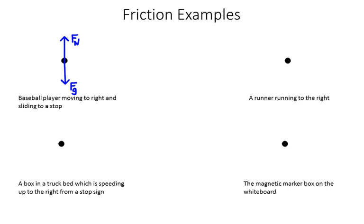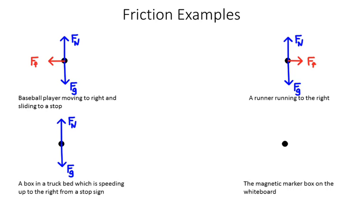Here are a couple of examples. First, a baseball player moving to the right and sliding to a stop — anytime you see sliding, friction is probably important. If the player is moving to the right and slowing down, friction must act to the left. Next, a runner moving to the right moves forward because of friction between their feet and the ground, so friction acts to the right. Similarly, a box in a truck speeding up to the right from a stop sign is kept from sliding off by friction acting to the right.